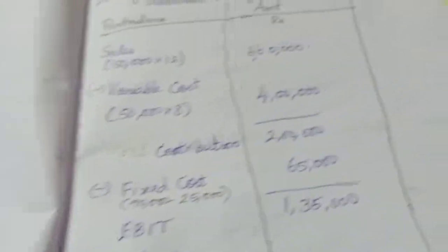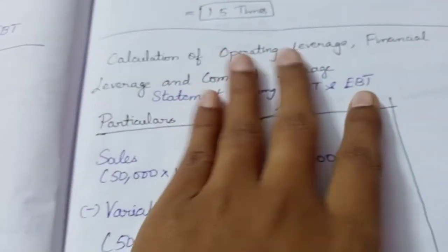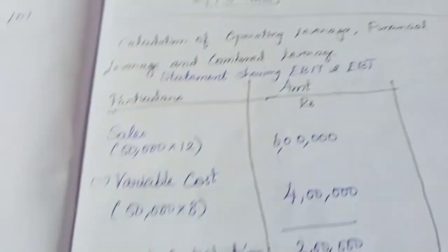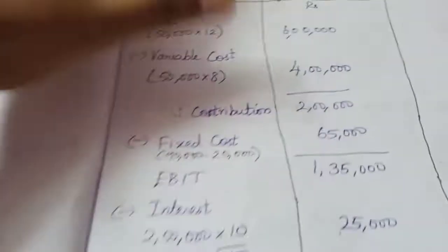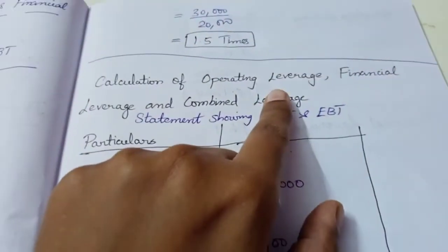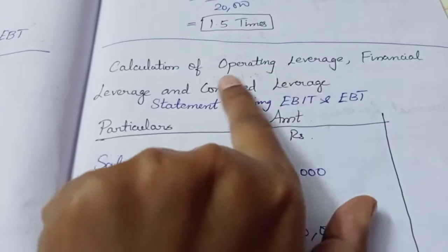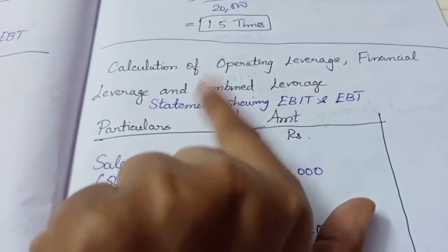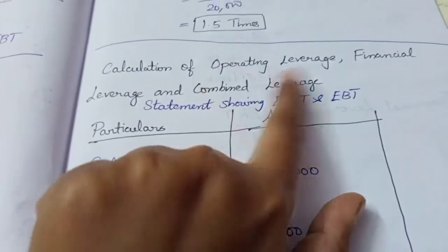Whenever we have a leverage problem, we prepare the statement first, then apply the formula, and then substitute the values. We need to calculate Operating Leverage, Financial Leverage, and Combined Leverage. We prepare a Profitability Statement to determine EBIT and EBT.